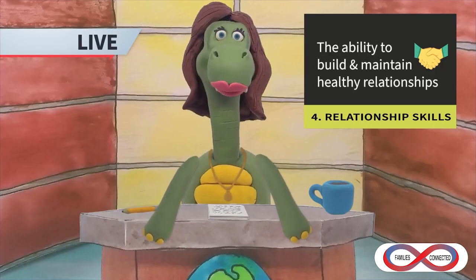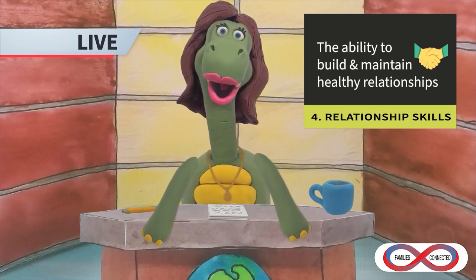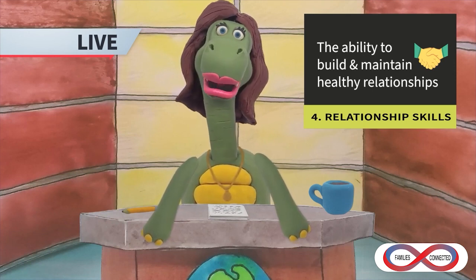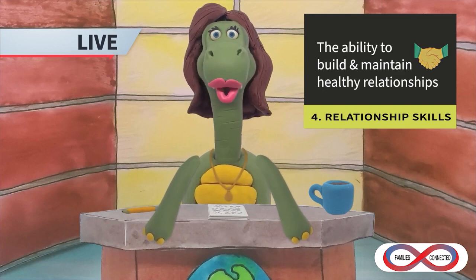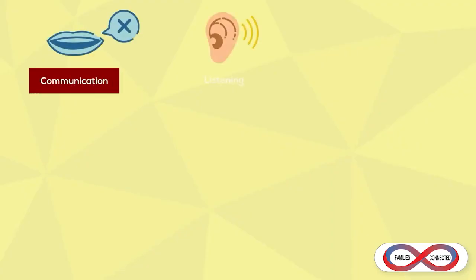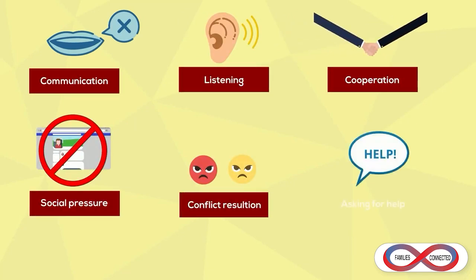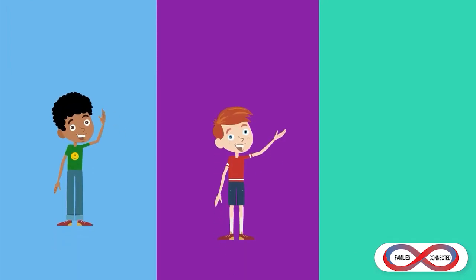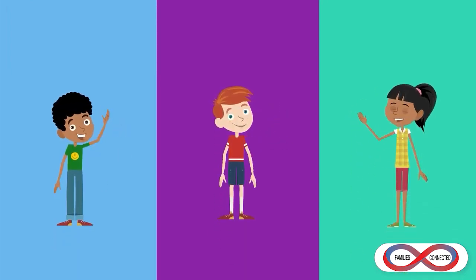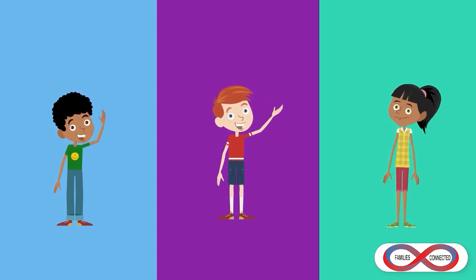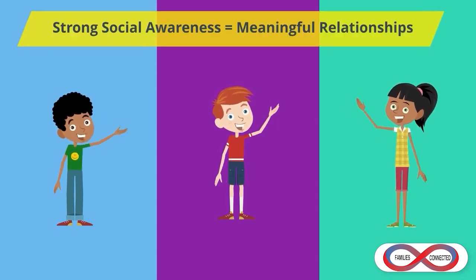Number four: relationship skills. Relationship skills is the ability to build and maintain healthy relationships with diverse people and groups. This includes communicating, listening, cooperating, resisting social pressure, dealing with conflict well, and seeking help when needed. When we have good relationship skills, we can work well in a team and build strong, lasting friendships. Building strong social awareness can help your child create deep and meaningful relationships. When they can understand and name their feelings, they can create space to imagine what it is like for others.